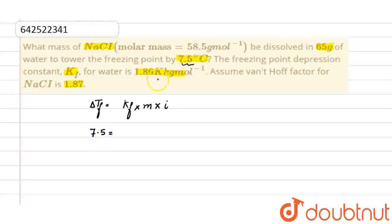And the value of Kf in degree Celsius is 1.86 degree Celsius kilogram per mole. The molality is weight of solute, which we have to find out, that will be x.